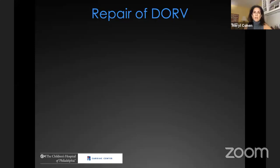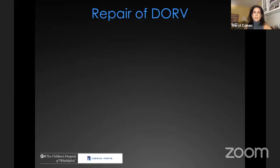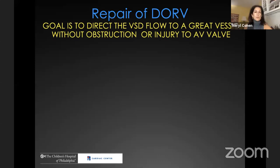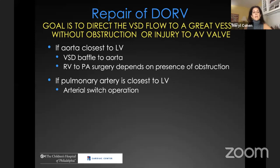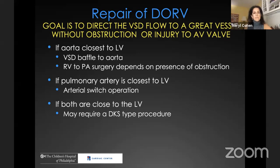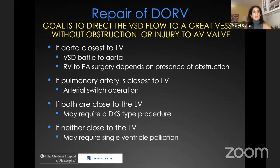For biventricular repair of double outlet right ventricle, our goal is to direct VSD flow to a great vessel without obstruction or injury to an AV valve. If the aorta is closest to the left ventricle, the VSD is baffled to the aorta and the RV-to-pulmonary artery pathway can be opened or left alone depending on obstruction. If the pulmonary artery is closest, the patient likely needs an arterial switch operation. If both are close, it may require a Damus-Kaye-Stansel procedure with baffle closure to both great vessels. If neither is close, as in remote VSD, some patients require single ventricle palliation to Fontan.